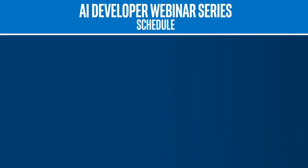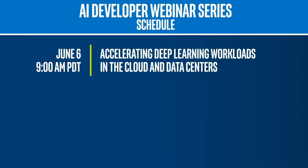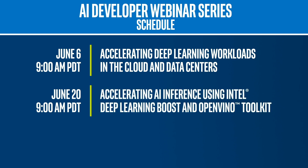June 6 is the Accelerating Deep Learning Workloads in the Cloud and Data Centers webinar. Next, June 20 is Accelerated AI and DL inference on the second gen Intel Xeon scalable processors using the Intel Distribution of OpenVINO Toolkit.